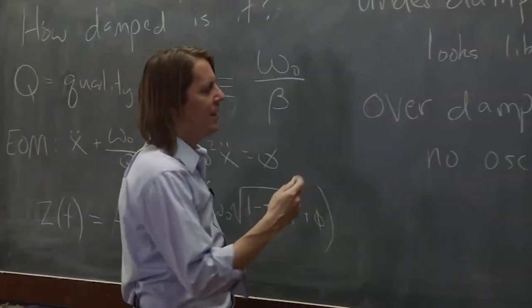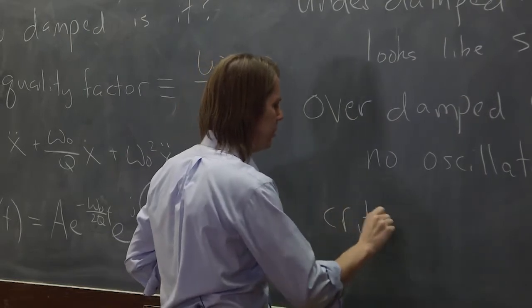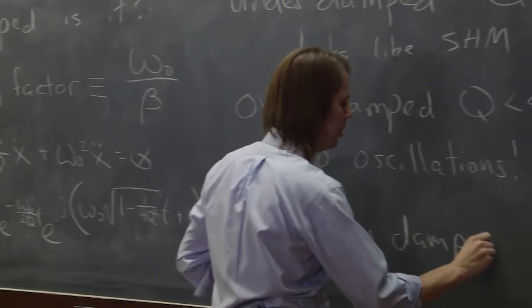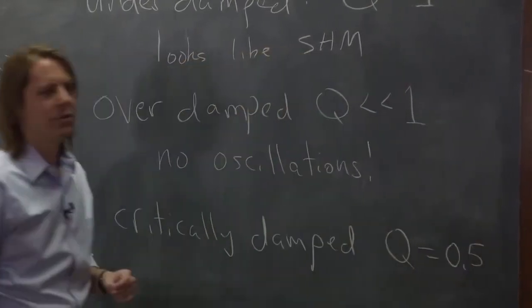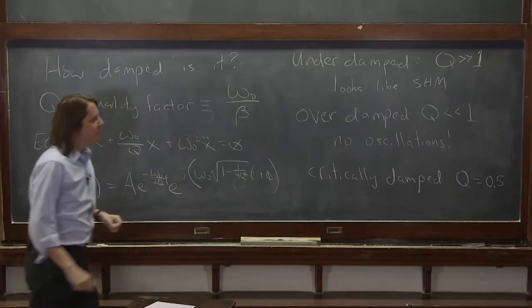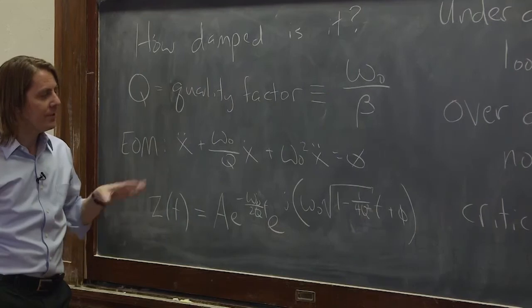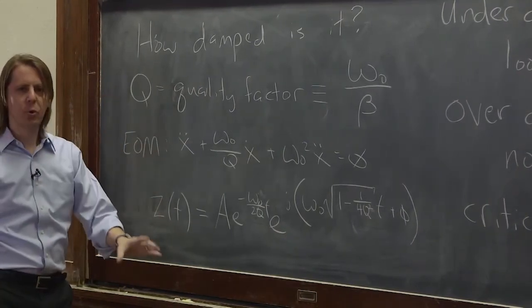The one other case that's special is critically damped. And this is the case where Q is a half, Q equals 0.5. This case is special. It also won't oscillate. It's not an oscillating solution, but it's the one where it would get back to the origin the quickest.